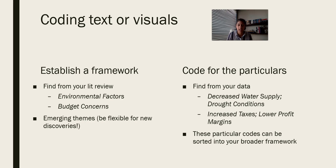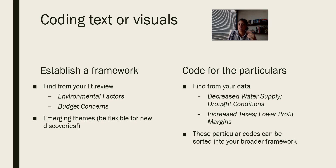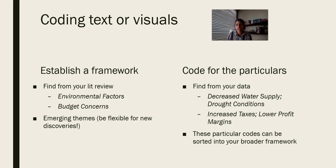When coding text or visuals — and text could be an interview, something you're reading, or images like on Instagram — you need to establish a framework. This framework will probably come out of your literature review. For example, if environmental factors are discussed a lot in your literature review, you'll be coding and looking for evidence of environmental factors at play. Be open to emerging themes as well, so you can find new pieces of data and contribute new frameworks.